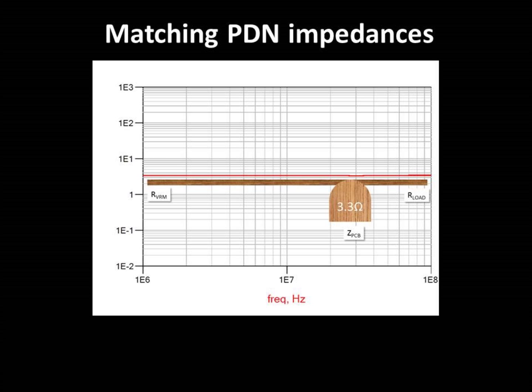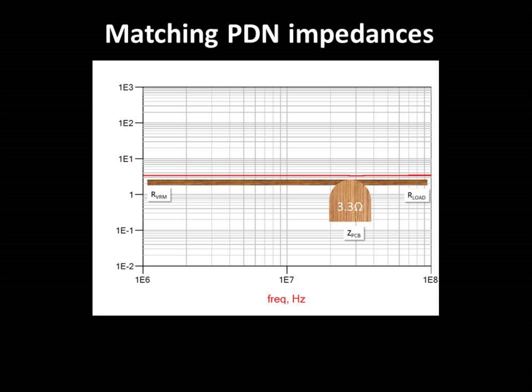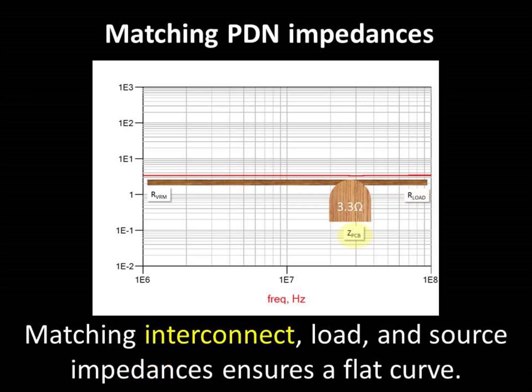In the area of PDNs, impedance matching is so important because the lowest PDN impedance occurs when the source and load impedances are exactly equal. Matching the interconnect impedance, the load impedance, and the source impedance ensures a flat impedance curve as shown here.